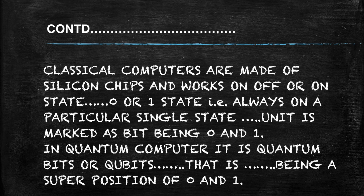Classical computers are made up of silicon chips and work on the core concept of off or on state — zero or one — always in a single state at a time. This zero and one unit is marked as a bit. Contrary to this, quantum computers use quantum bits, or qubits. A qubit is a superposition of zero and one — it can be zero, one, or both zero and one simultaneously. That is the peculiar conception of quantum computing.